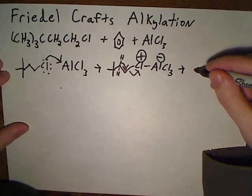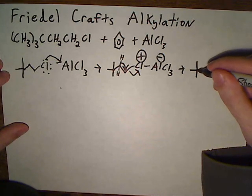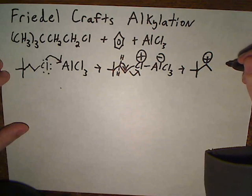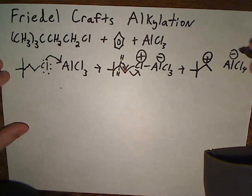And that gives us this compound right here where we now have the positive charge on a secondary carbon, and we also have our Lewis acid which now has four chlorines and negative charge.